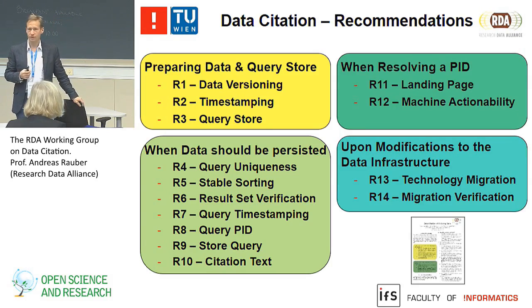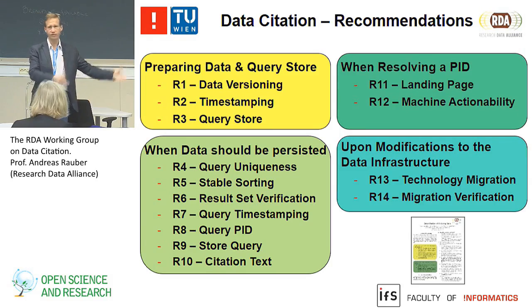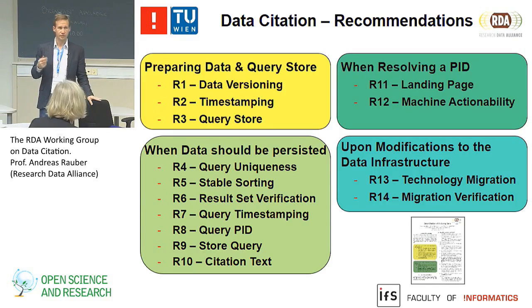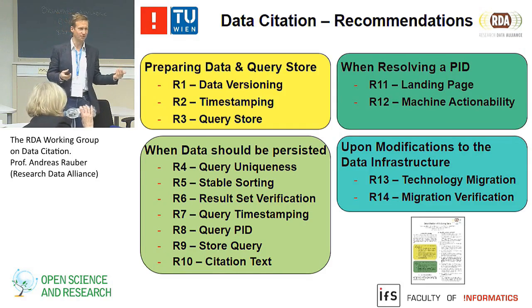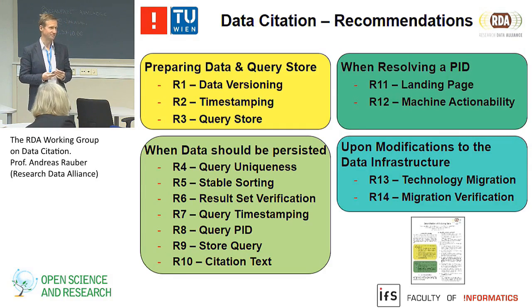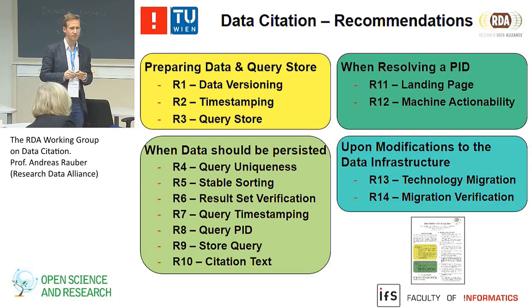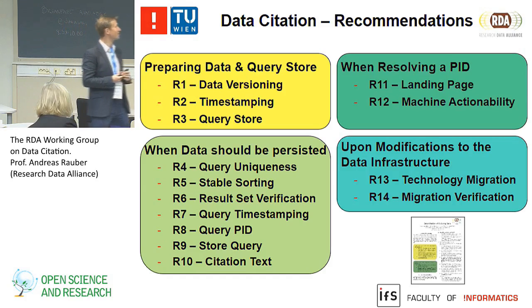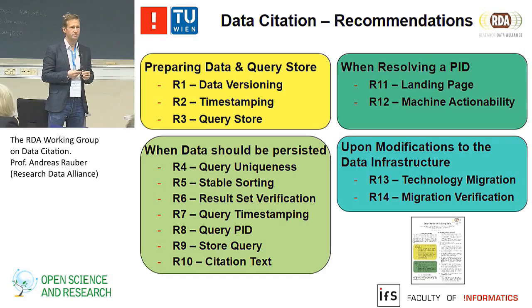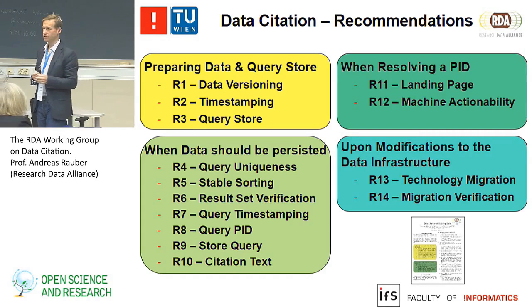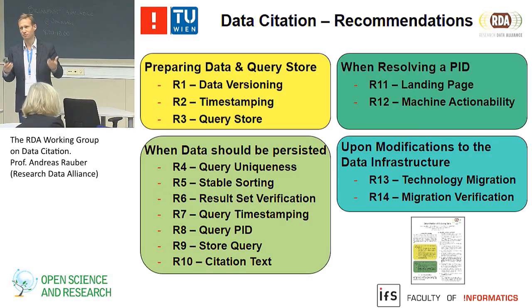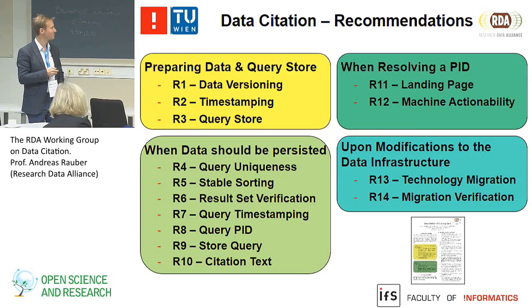Data infrastructures never stay the same forever. At some point the schema changes or you migrate your database to a completely different representation. When you do that, the queries need to be migrated as well. Assuming the new representation is at least as powerful semantically as the old one, you can migrate the queries to result in the same subsets. Data centers don't migrate their entire data infrastructure on an annual basis, so this is a major but infrequent effort. Recommendation 14 was added because people felt unhappy with an unlucky number—it simply says: if you do that migration, verify and check whether things went correctly.